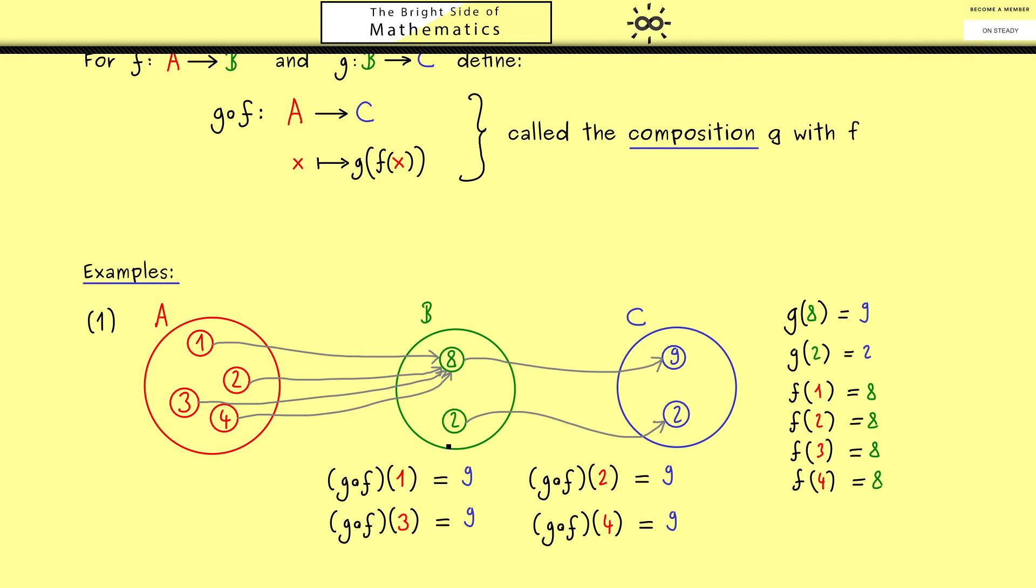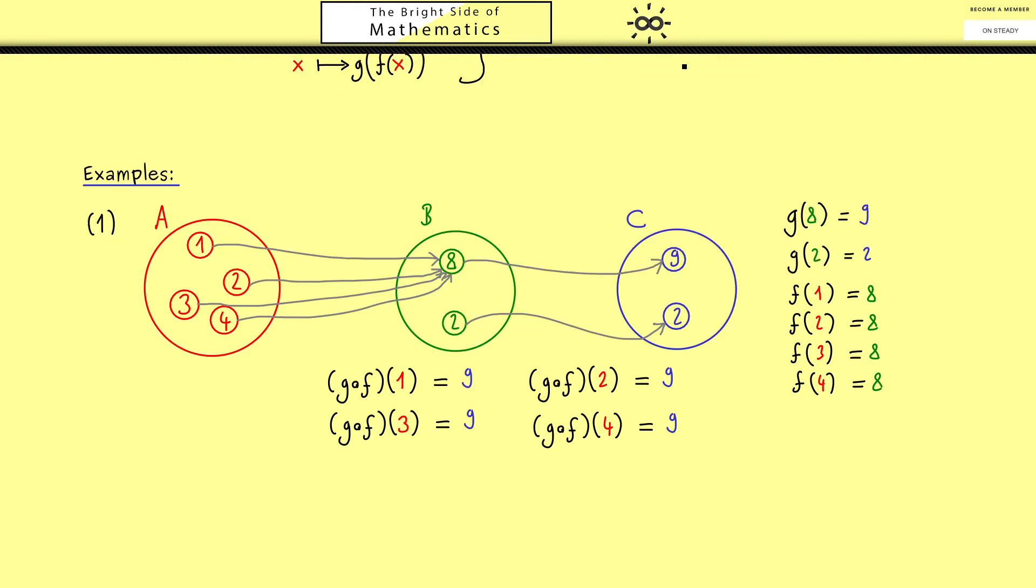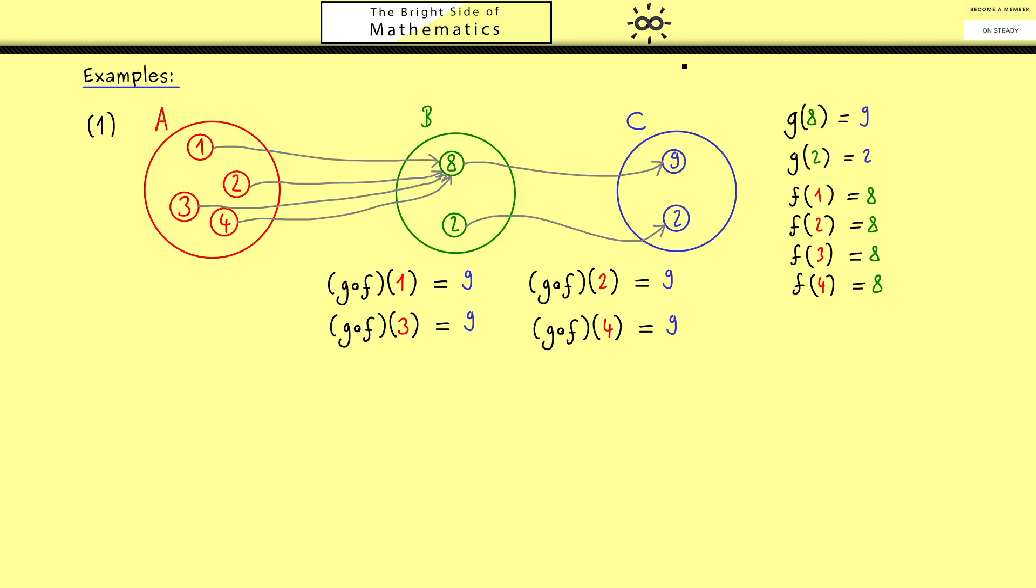In this example the other way around wouldn't make any sense. However, this changes when all the three sets are actually the same. In the next example we just take the real numbers R for all the three sets.